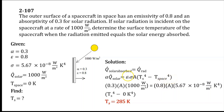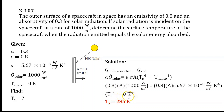Plugging in the values, we have 0.3 multiplied by the surface area multiplied by 1000 watts per square meter, equal to 0.8 multiplied by the surface area multiplied by the Stefan-Boltzmann constant 5.67 × 10⁻⁸ watts per square meter per Kelvin⁴, multiplied by the quantity of the surface temperature raised to the 4th power minus 0 Kelvin raised to the 4th power — since the temperature of deep space is 0 Kelvin. The surface area cancels from both sides.